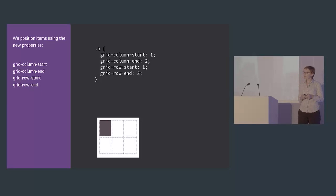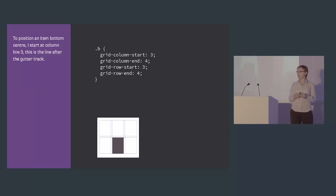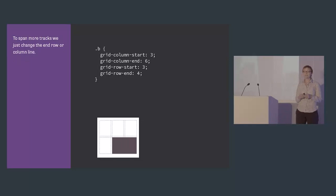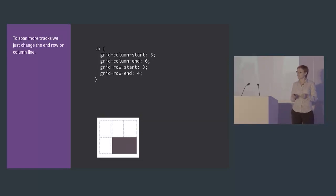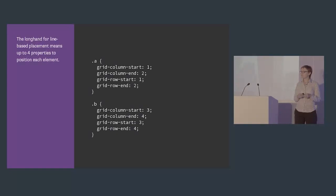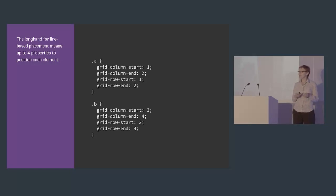Now we can place child elements onto that grid. I could place the div with a class of 'a' top-left using grid-column-start and grid-column-end to define the lines before and after the columns, and grid-row-start and grid-row-end to define the row lines above and below the item — putting 'a' into the top-left cell. We can do the same with 'b', placing it bottom-center. To place 'b' in the second content cell I start at line three because I've got a gutter line. To span 'b' over two content columns and a gutter track, I change grid-column-end to six.